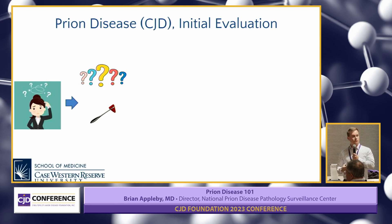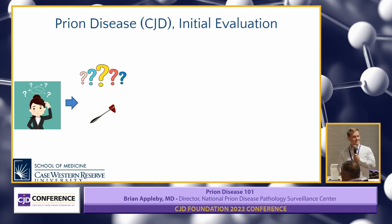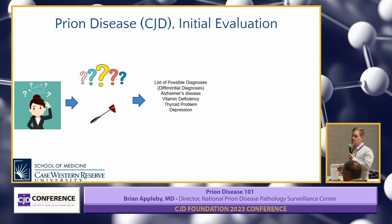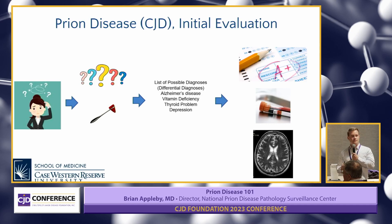The doctor at that time may do a physical exam, some bedside memory testing — the famous test where you remember five items and say them back. Depending on what they find and how the patient answers different questions, you'll have a possible list of diagnoses. In medicine, we call this a differential diagnosis, and that can include things like Alzheimer's, vitamin deficiencies, thyroid problems, and depression. That will lead the clinician to order specific tests to narrow down that list.